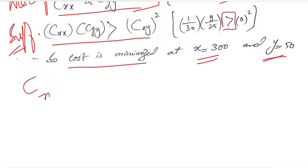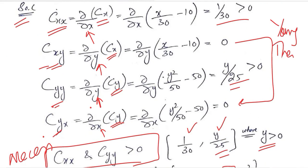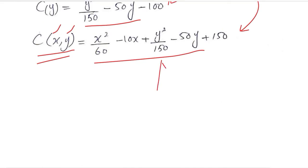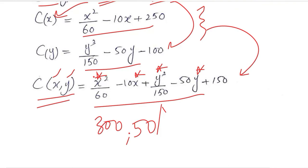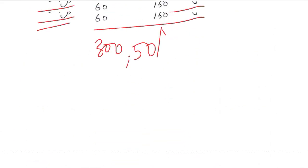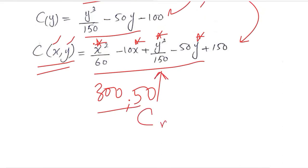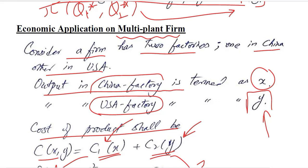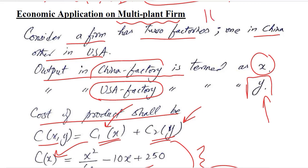You can also find the minimized value of cost. For that, you will put the critical values of X and Y in the cost function. This is the cost function, a lengthy function. Here you put X star instead of X and Y star instead of Y. Put their values and you will get the minimized cost. In this way, we can do the optimization of a multi-plant firm. In that optimization, you can do profit maximization if the revenue function is given, and if it is not given, then you can do cost minimization. Thank you.